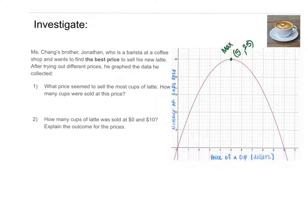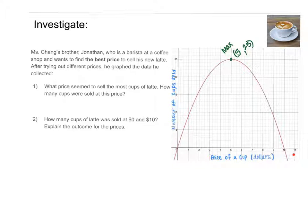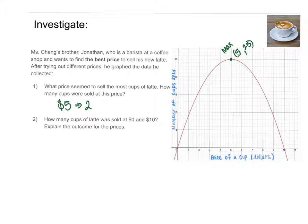The story problem says Miss Chang's brother Jonathan is a barista who wants to find the best price for his new latte. He tried different prices and graphed the data he collected. The question asks: what price sells the most cups, and how many cups were sold? Looking at the graph, the best price is five dollars, because that sold the most — 25 cups, which is the maximum.